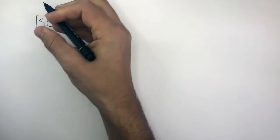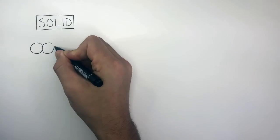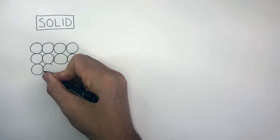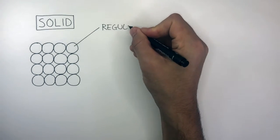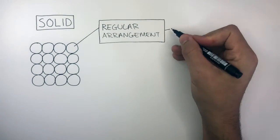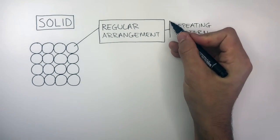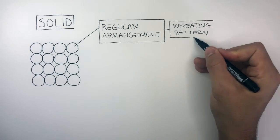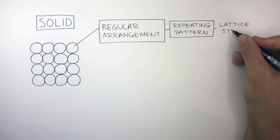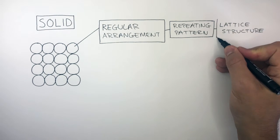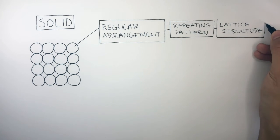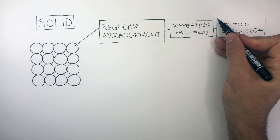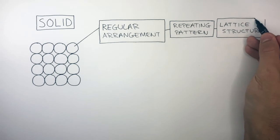In solid particle diagrams, the particles are drawn in straight lines and they're close together. This is because the particles in solids have a regular arrangement where there is a repeating pattern. The term used to describe this is a lattice structure — used to describe any solid where the particles have a regular arrangement in a regular repeating pattern.